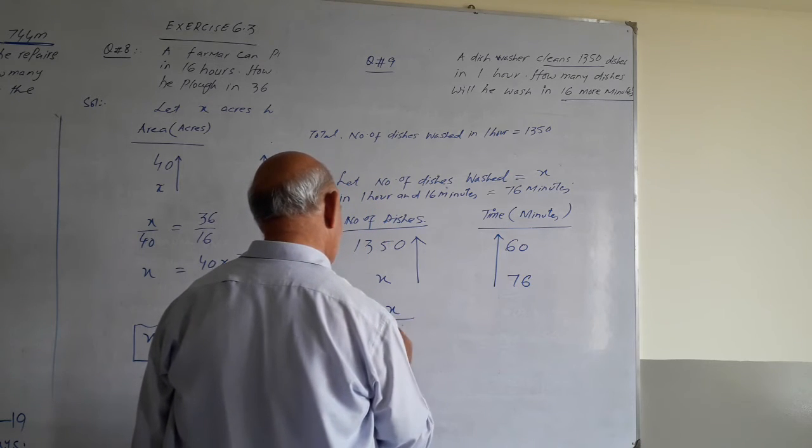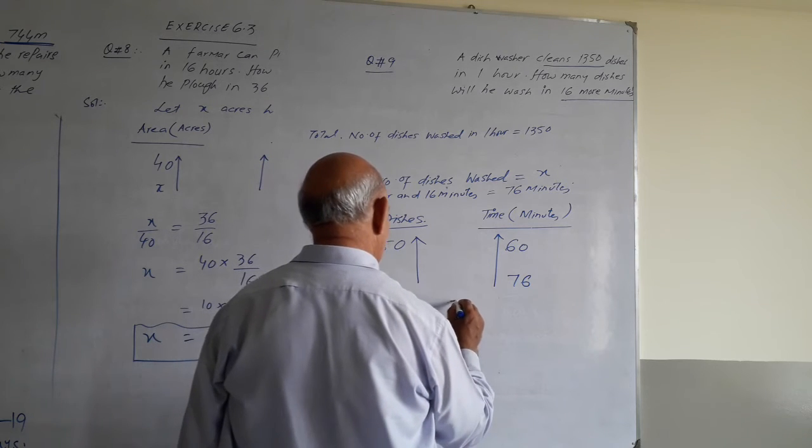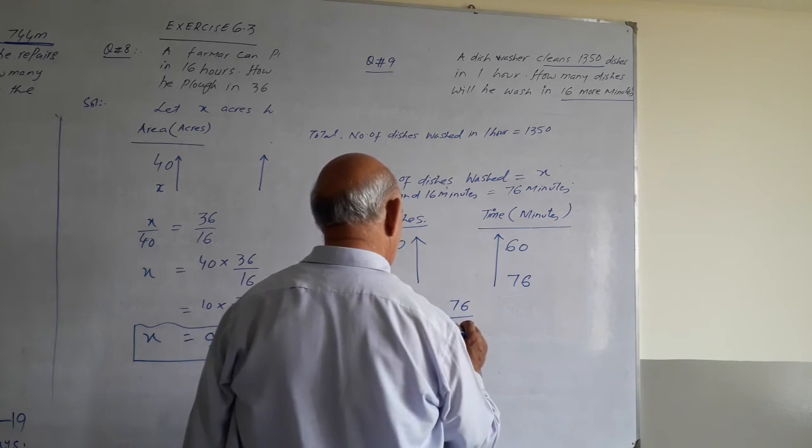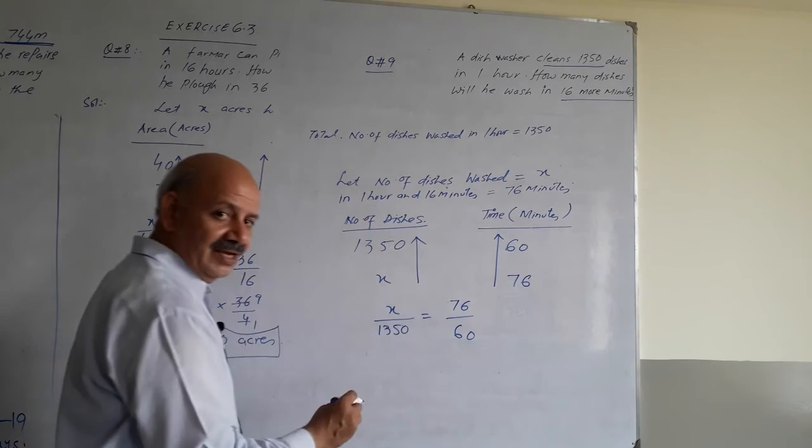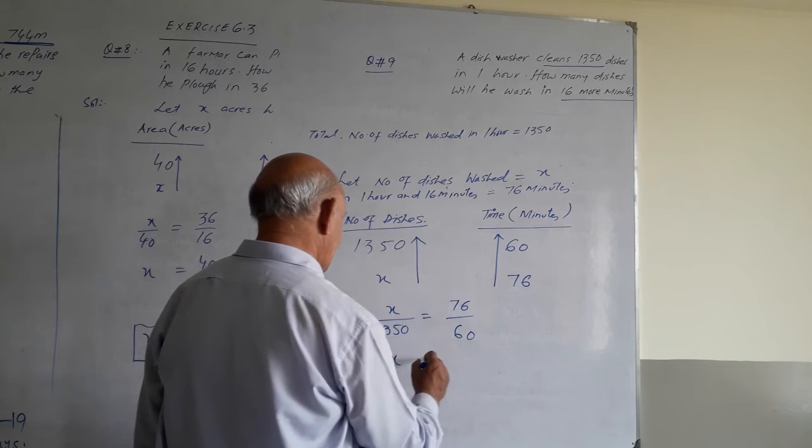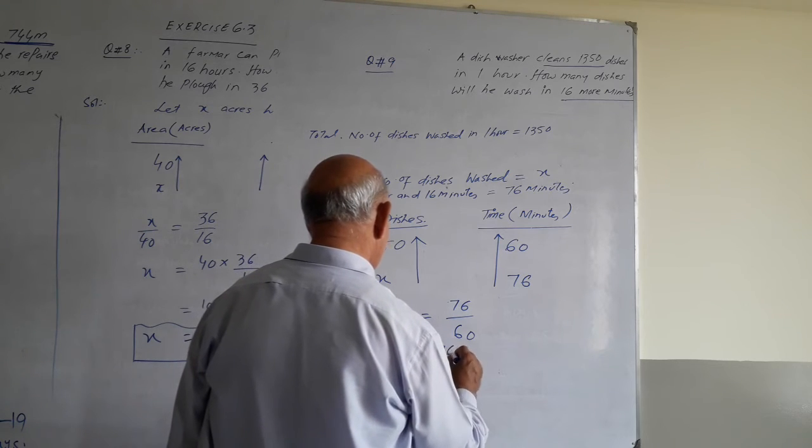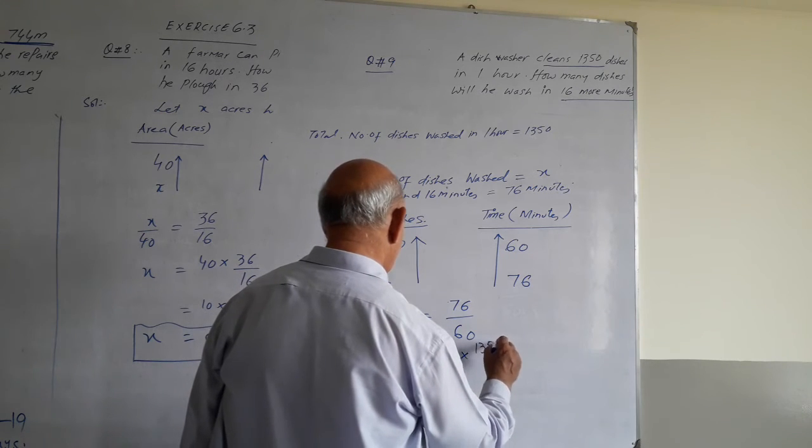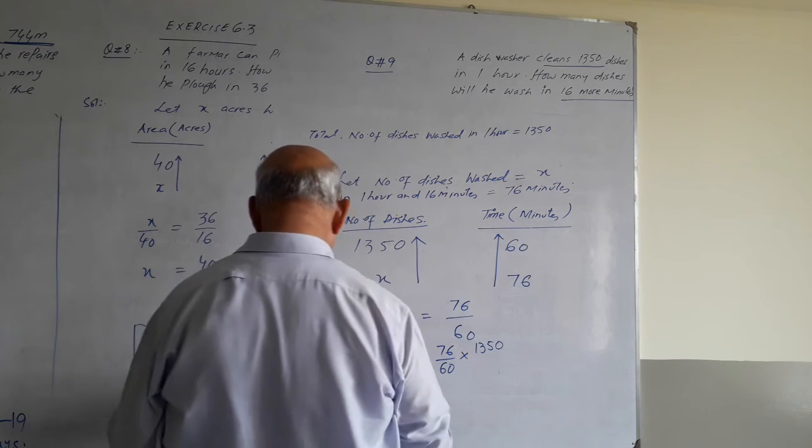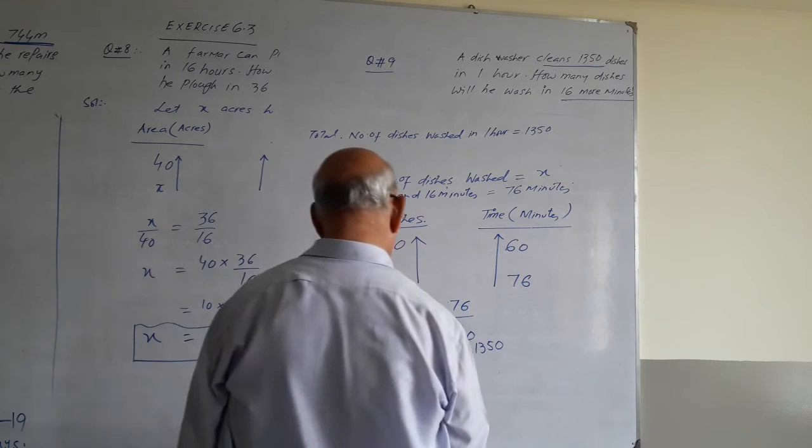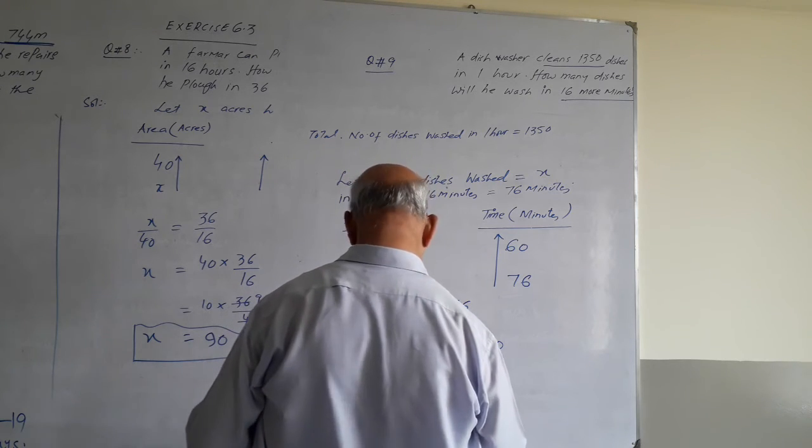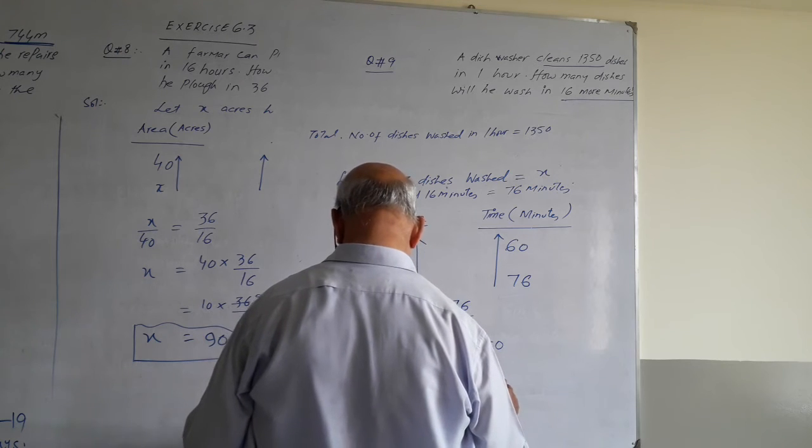So x over 1350 is equal to direct variation and direct proportion. We have to calculate the value using the proportion equation to find the answer.